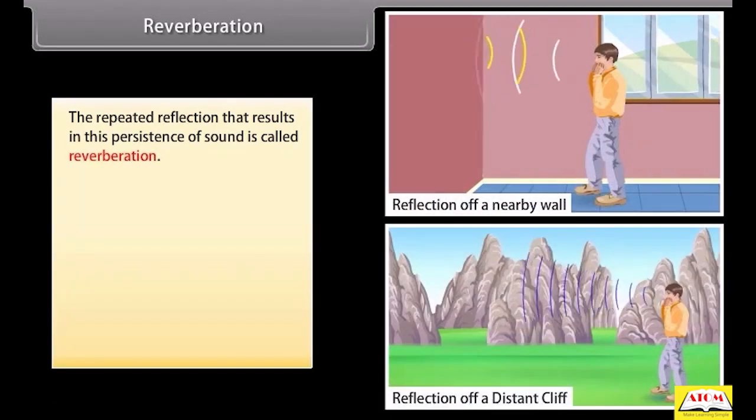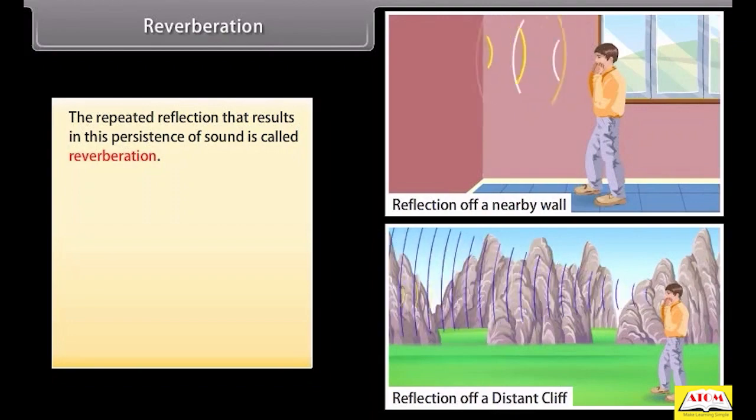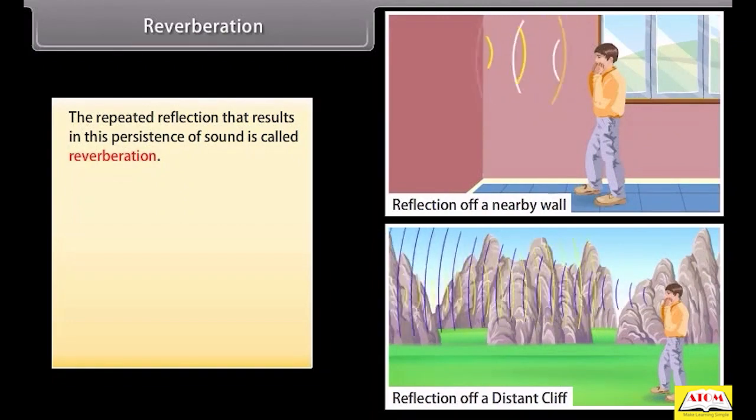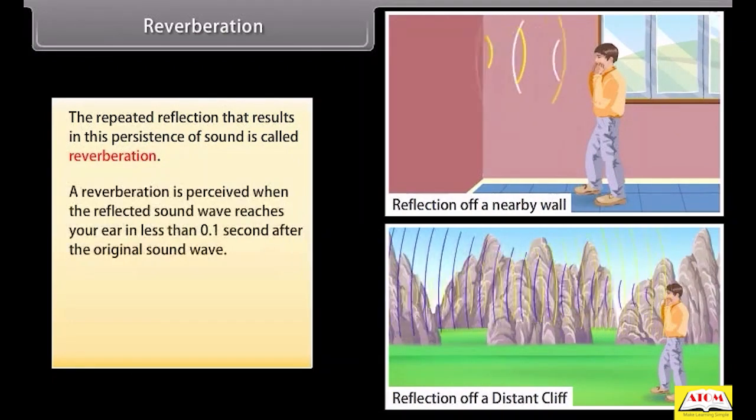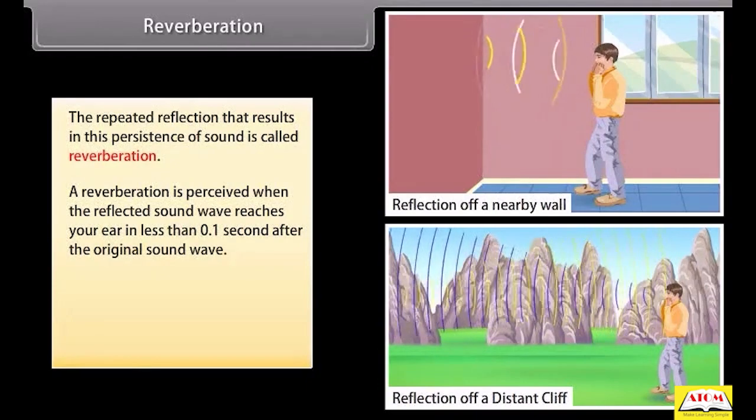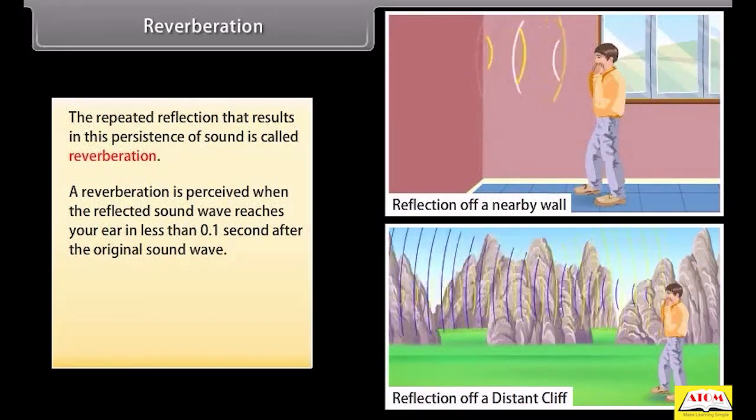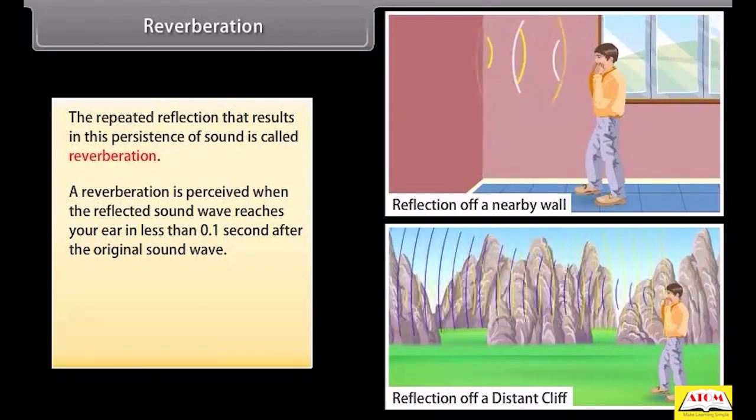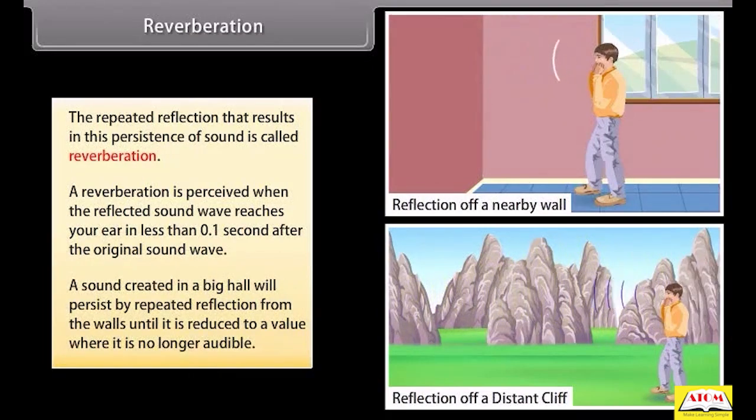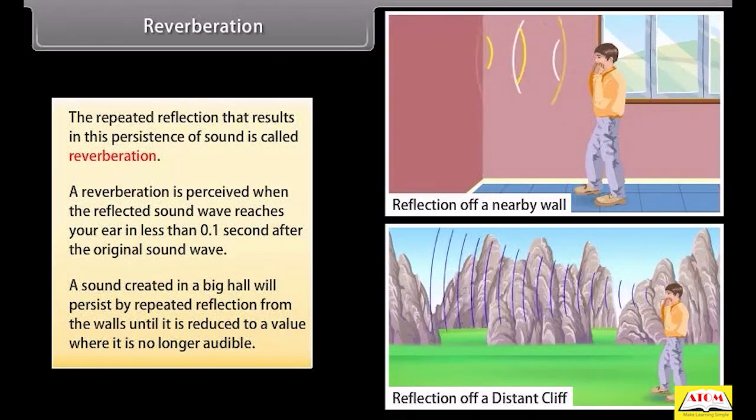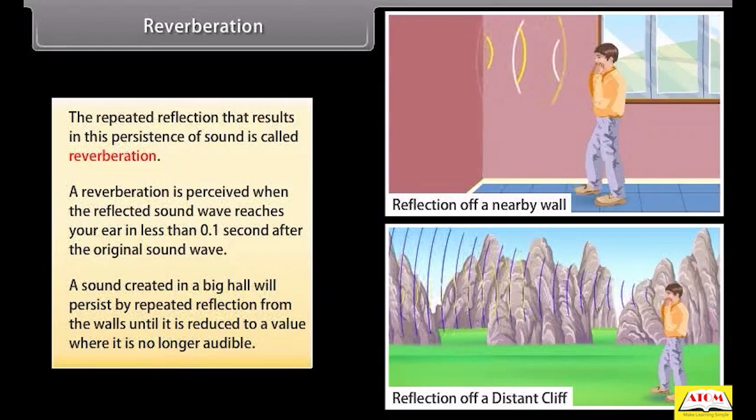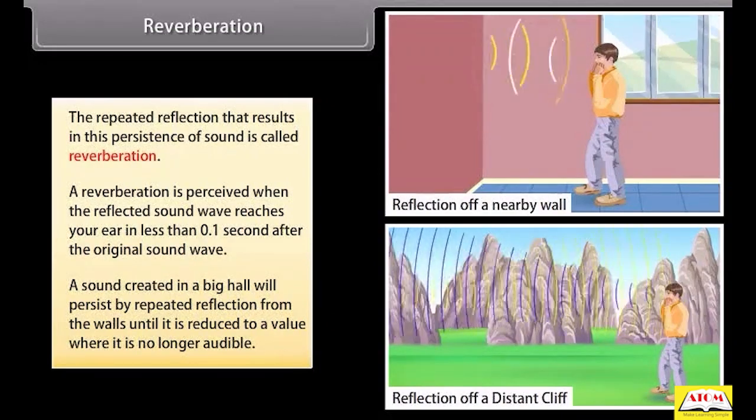Reverberation. The repeated reflection that results in this persistence of sound is called reverberation. A reverberation is perceived when the reflected sound wave reaches your ear in less than 0.1 second after the original sound wave. For example, a sound created in a big hall will persist by repeated reflection from the walls until it is reduced to a value where it is no longer audible.